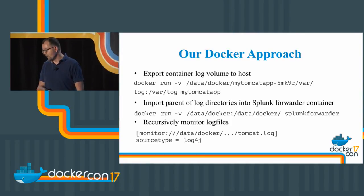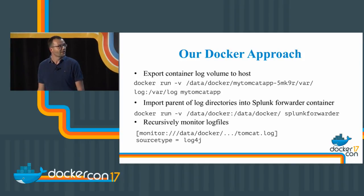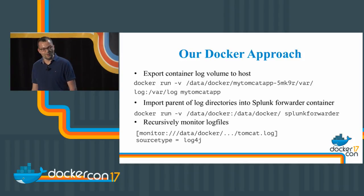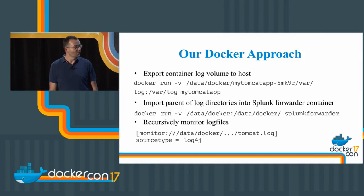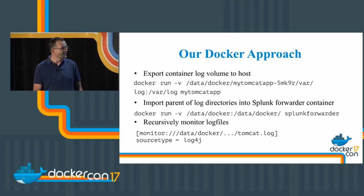Our approach to getting data into Splunk from those many options Mark showed: we've taken the one using the Splunk forwarder. We have a convention where applications write logs into the /var/log directory of the container. We mount that directory into a unique host volume, and the Splunk forwarder mounts the parent of that directory. Using three dots, it recursively searches for anything called Tomcat log. Even with roughly 100 different kinds of containers, around 15 routes capture all the DNS, Postgres logs, etc. That's basically how we ingest all the logs.